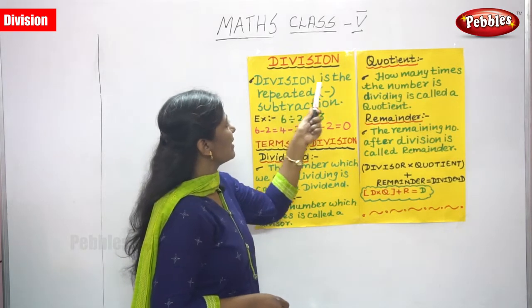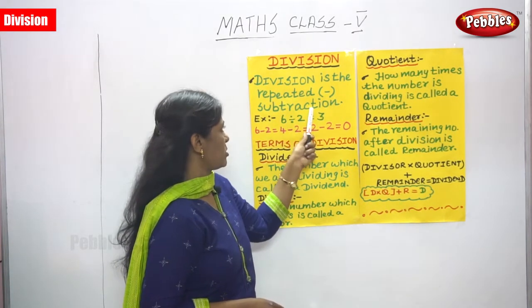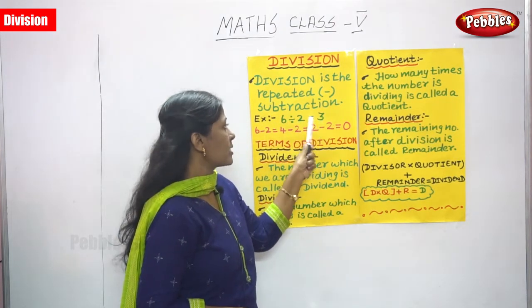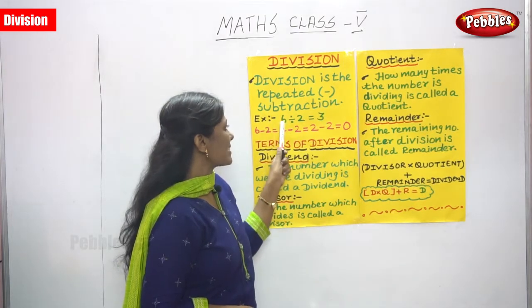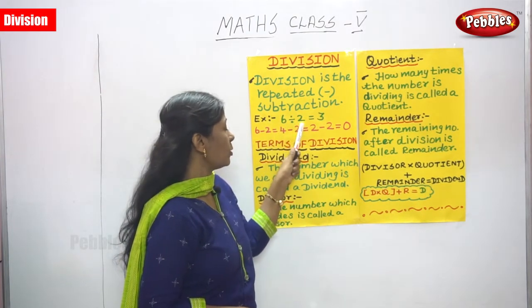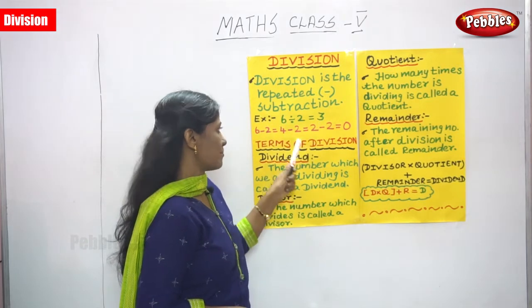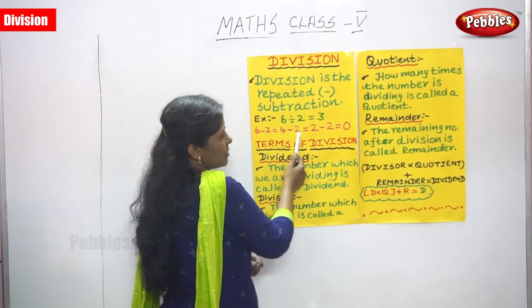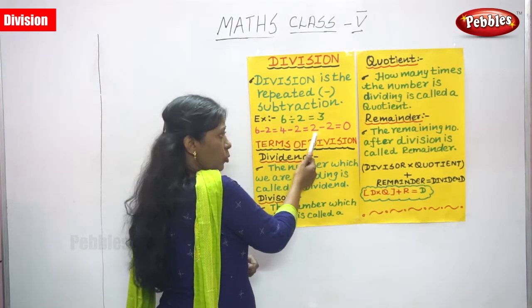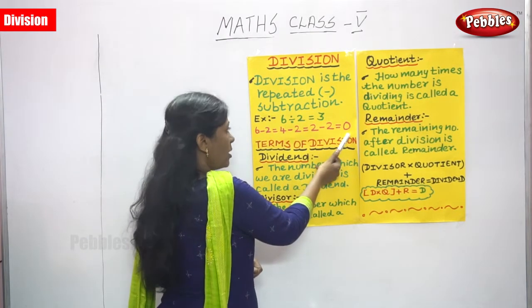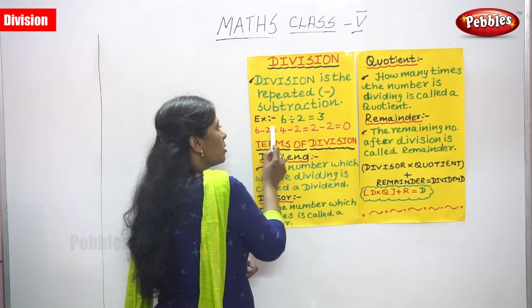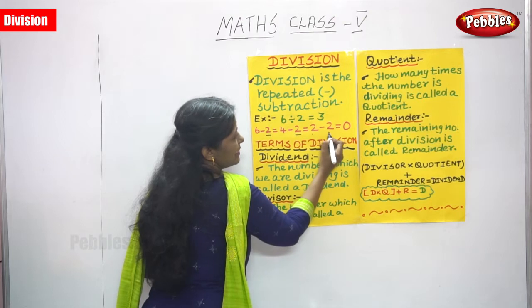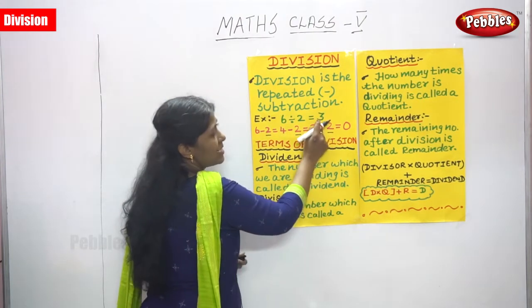Division is the repeated subtraction. For example, 6 divided by 2 is equal to 3. While we go for the subtraction: 6 minus 2 is equal to 4, 4 minus 2 is equal to 2, and 2 minus 2 is equal to 0. So, how many times does 2 come? That is 1 time, 2 times, 3 times.